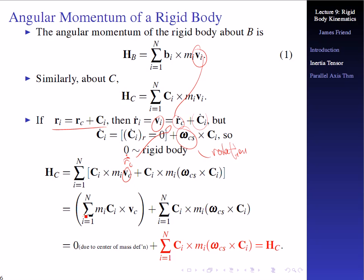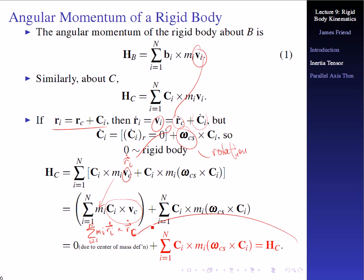The first term sums to zero by the center of mass definition — the sum of M sub i times C sub i is zero. So the angular momentum of the rigid body about the center of mass is only tied back to rotation.